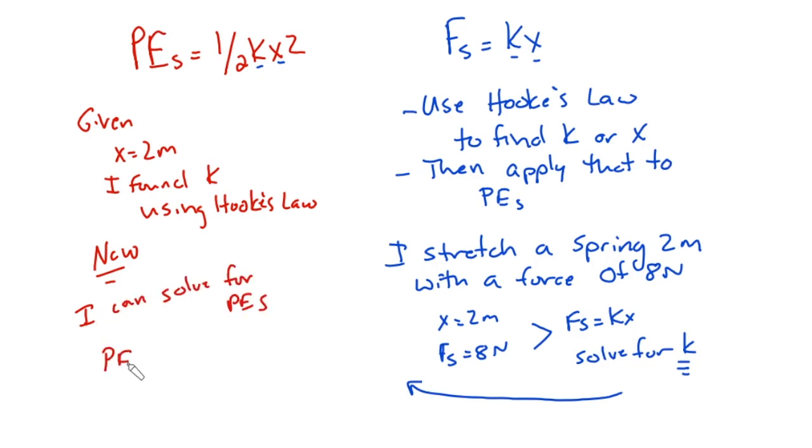So PEs equals one half Kx squared. One half K was found over here, and then 2 meters squared. So that's going to be a little bit more advanced. You're going to find one of these two and then plug it into here.